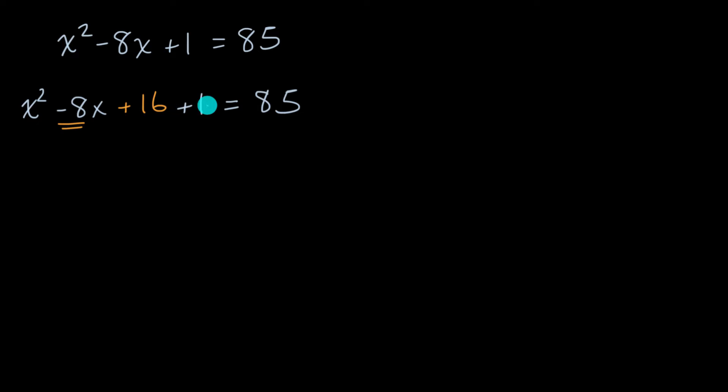And if I want, I could then subtract a 16 from the left-hand side, or I could add a 16 on the right-hand side. Notice, I've just done the same thing to both sides of this equation. And why was that useful? Well, now what I've just put in parentheses is a perfect square.